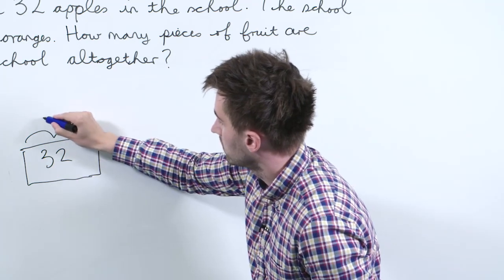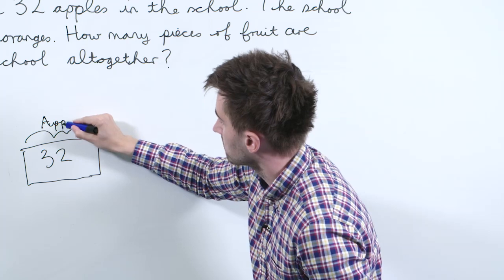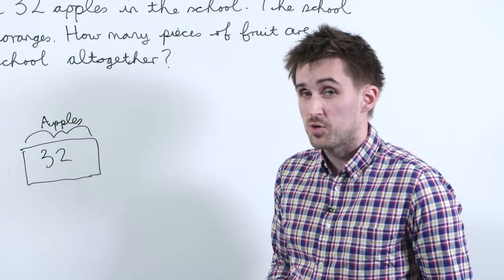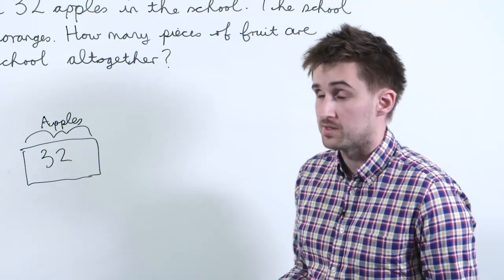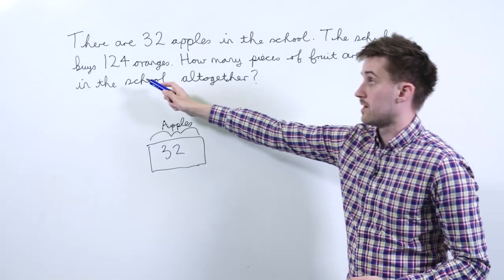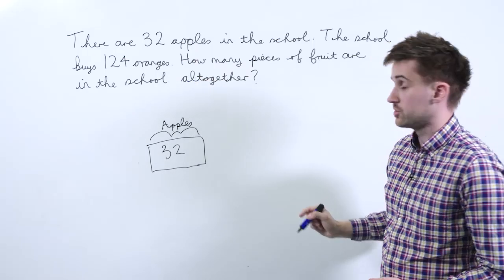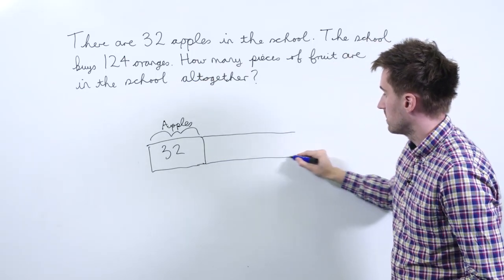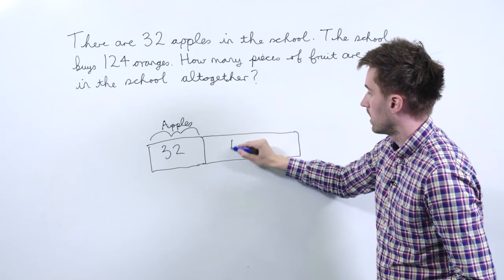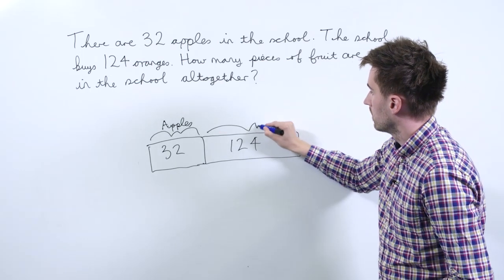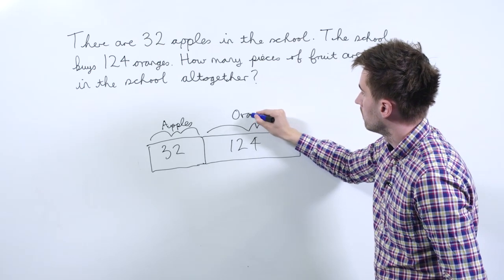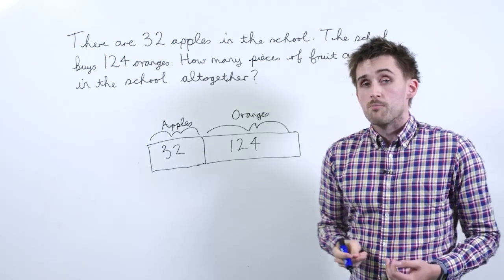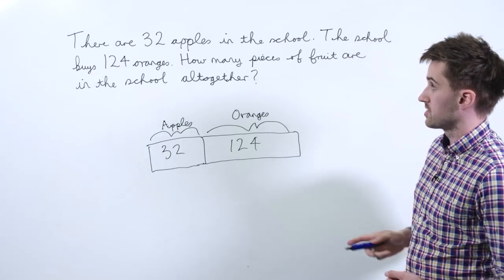clearly on the board for the pupils to see. At this point you want to ask the pupils what information do we have in the question, and they will point out that we also have 124 oranges, and we need to represent this on our bar model as well. Now the question is asking us to find how